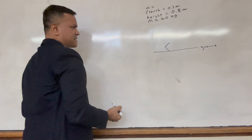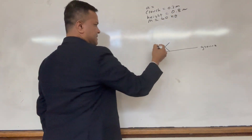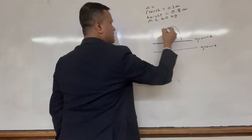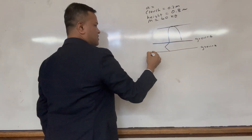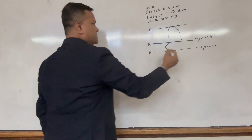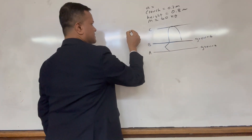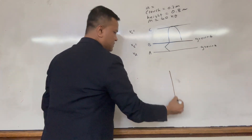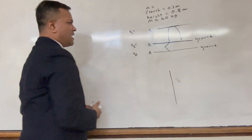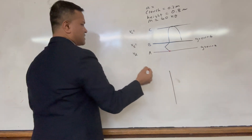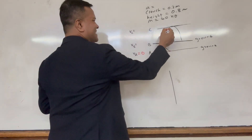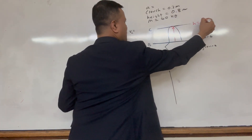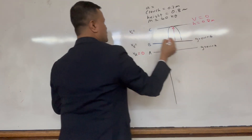Let's define the locations: location A is on the ground, location B is where he leaves the ground, and location C is the peak height of 0.8 meters. At location A, he is stationary so velocity is 0. At location C, height is 0.8 meters so velocity is also 0.